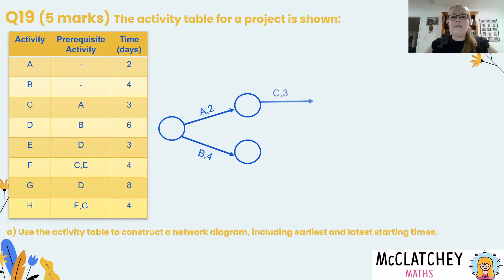Now our next activity is activity C. As we can see in the table here its prerequisite activity is activity A. So it needs to come out of the vertex that ends activity A. Then if we're going to move down as well we're going to have a look at this one down here, activity D.